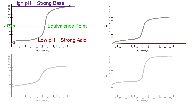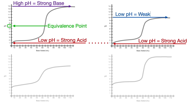If titration starts at a low pH, it indicates a strong acid, just like on the previous titration curve, but if it ends at a low pH, it indicates a weak base. A strong acid-weak base titration curve will have an equivalence point below pH of 7, meaning it will have an equivalence point more in the acidic range, because a strong acid will saturate the solution more with acid than a weak base will with base, pulling the pH of the equivalence point down to a lower pH.